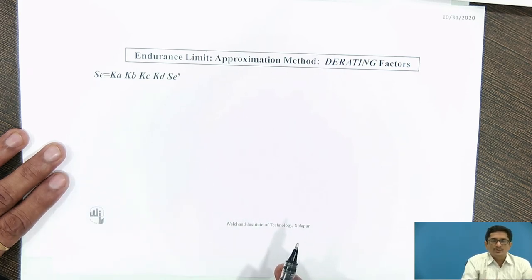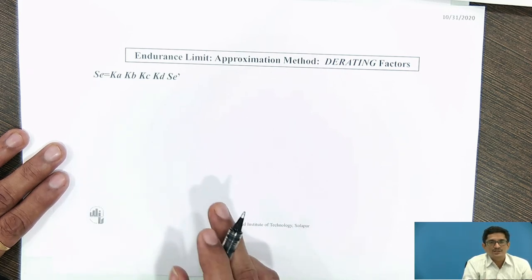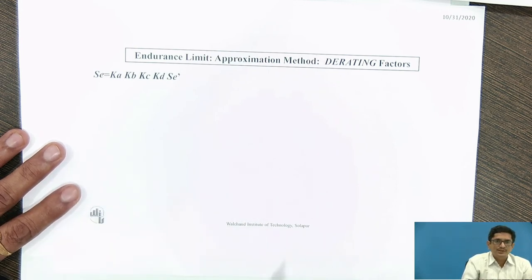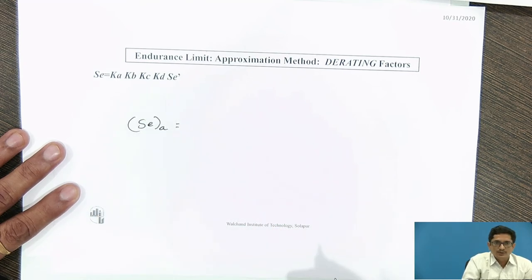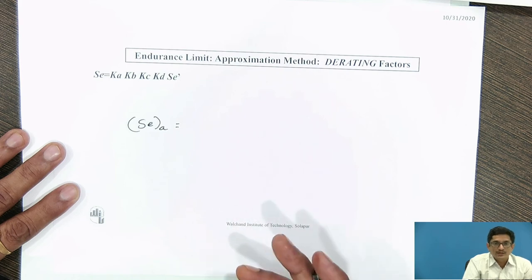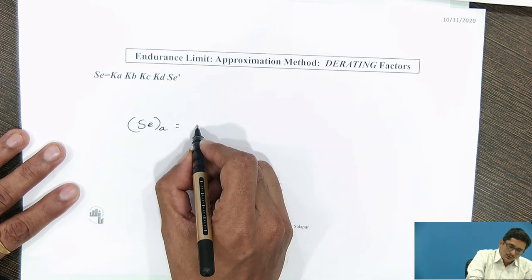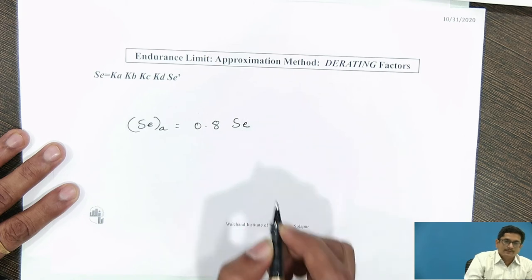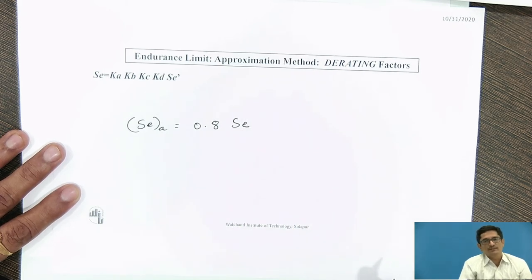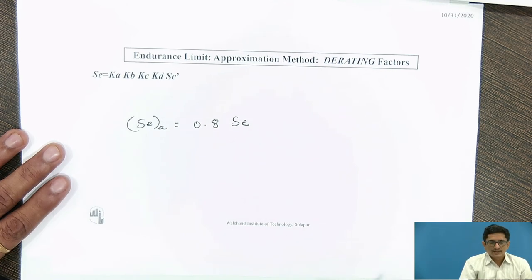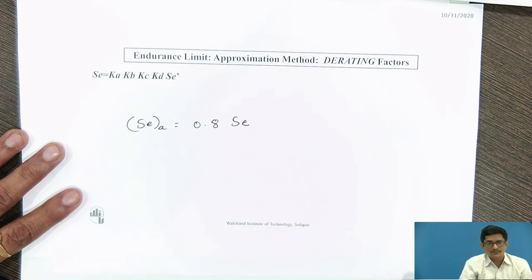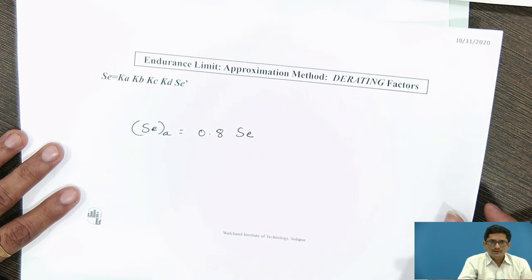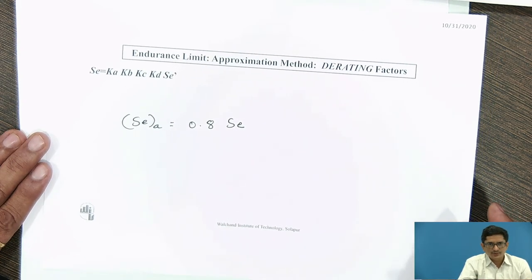This formula gives the endurance limit of a component subjected to bending. However, if the component is subjected to axial loading — fluctuating or fully reversed — then SE for axial loading equals 0.8 times SE. This is an important relation used when solving problems based on reverse loading. This method is called the approximate estimation of endurance limit. Thank you very much.